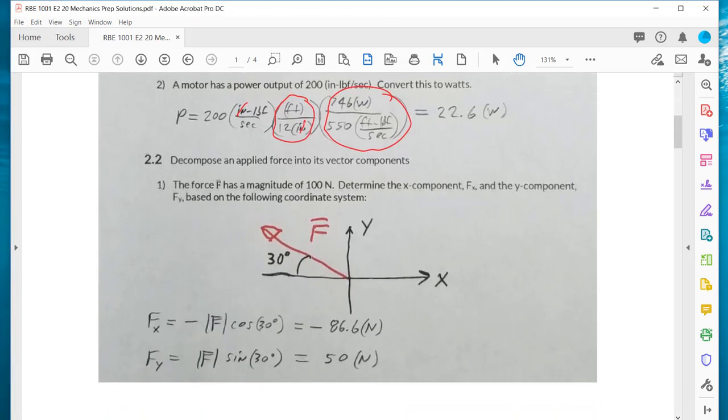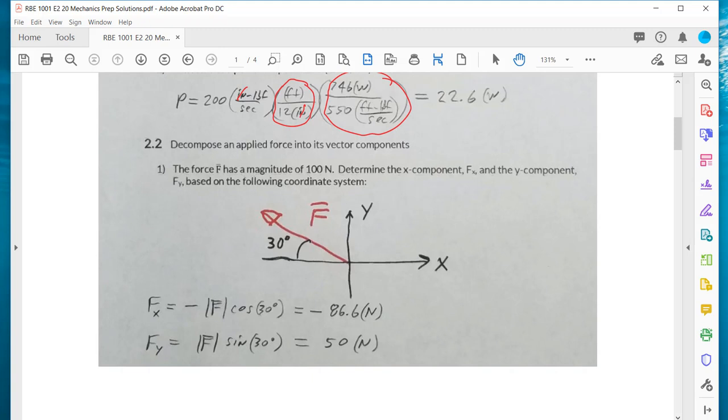In this next problem we had to look at this force. It is pointing to the left 30 degrees up from the horizontal. It has a magnitude of 100 newtons and the question was to determine the x and y components. Notice that the x component here is negative because we have x as positive to the right. You multiply by the magnitude by the cosine, and then the sine is positive because the y component is in the positive y direction.